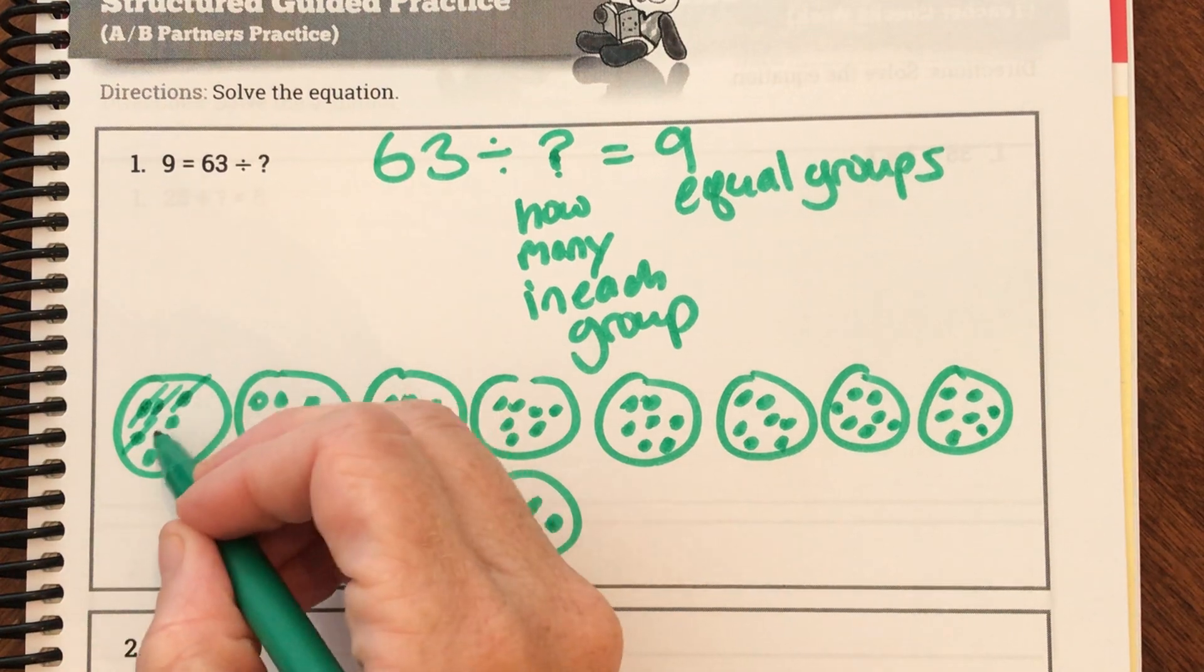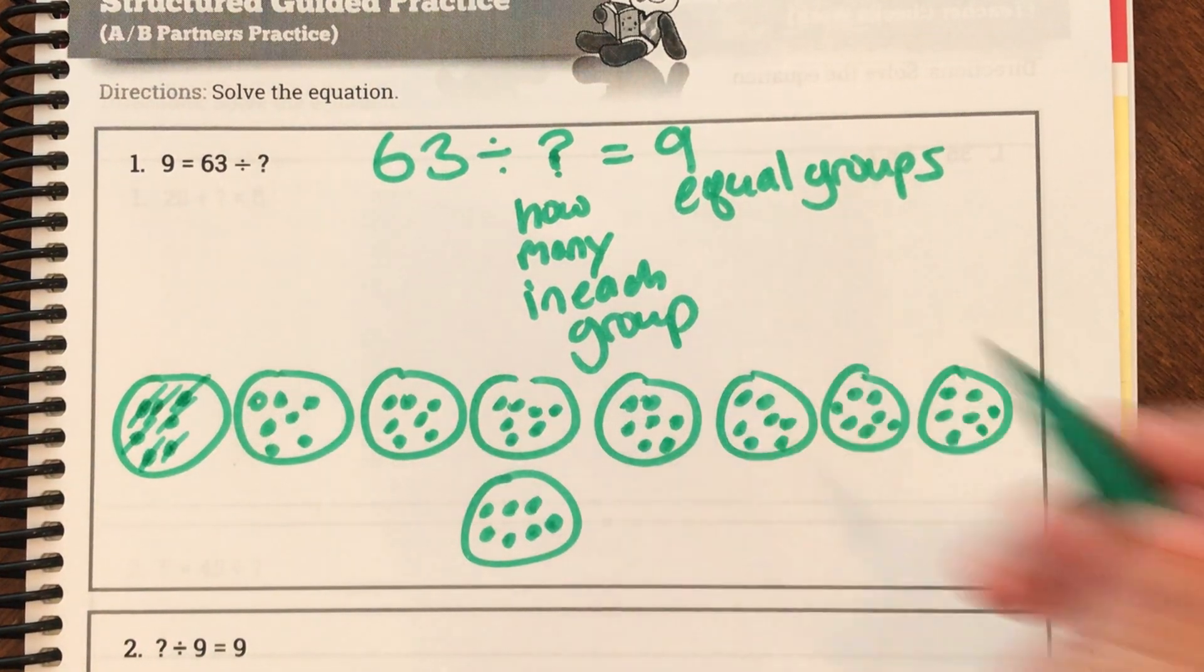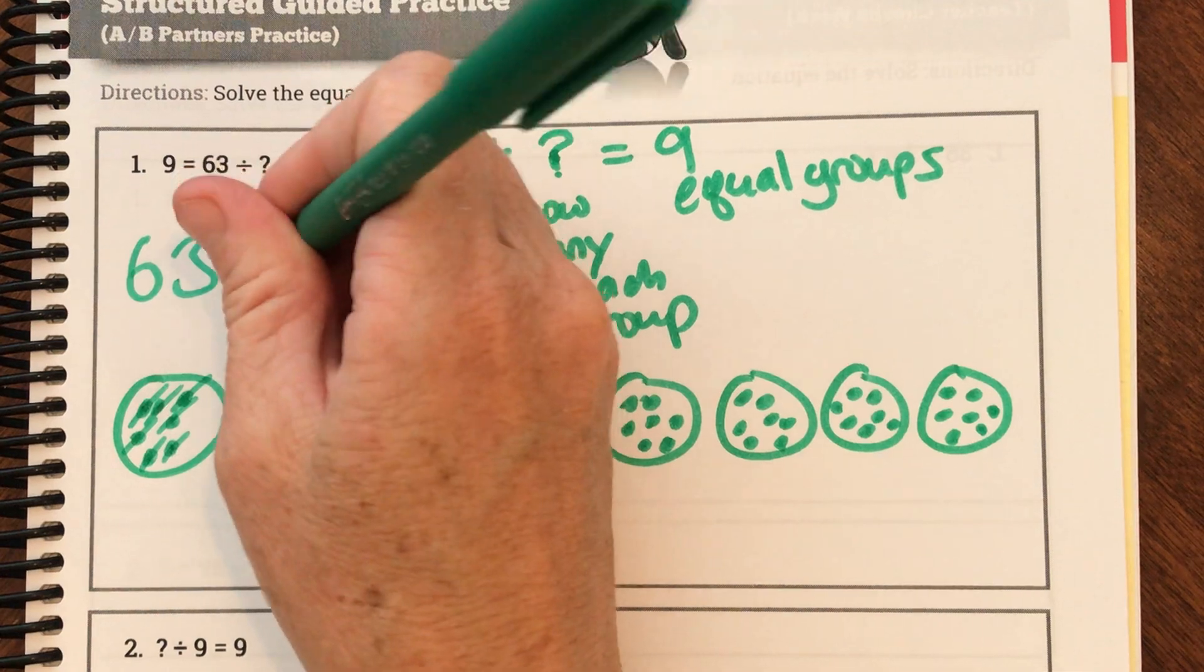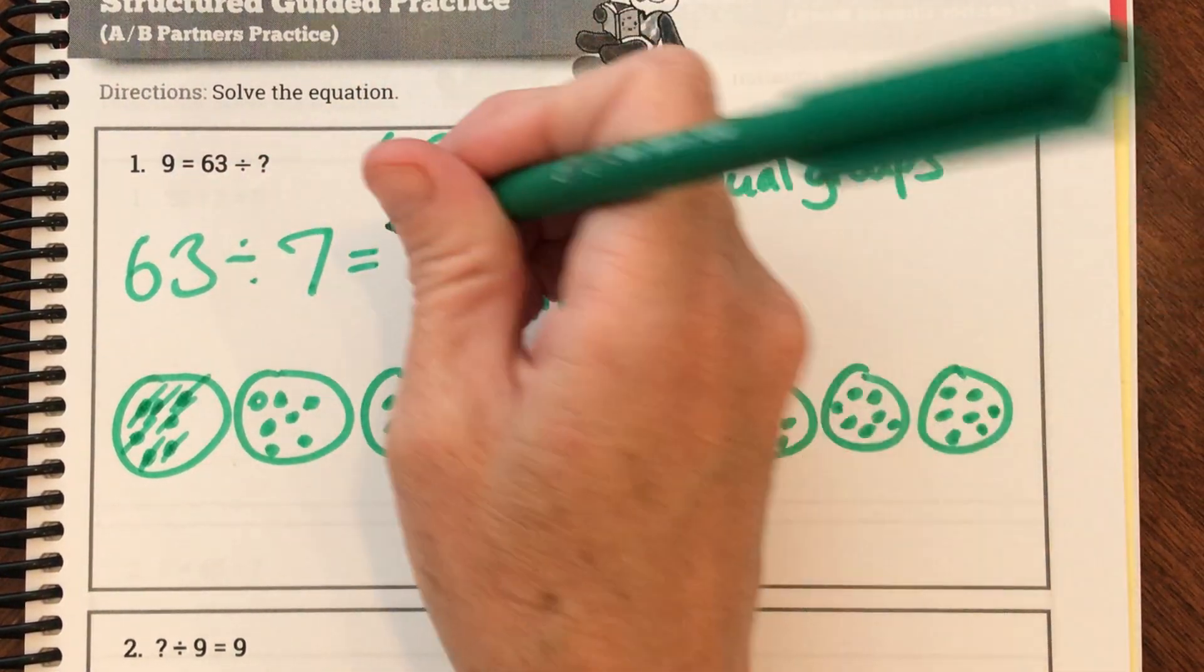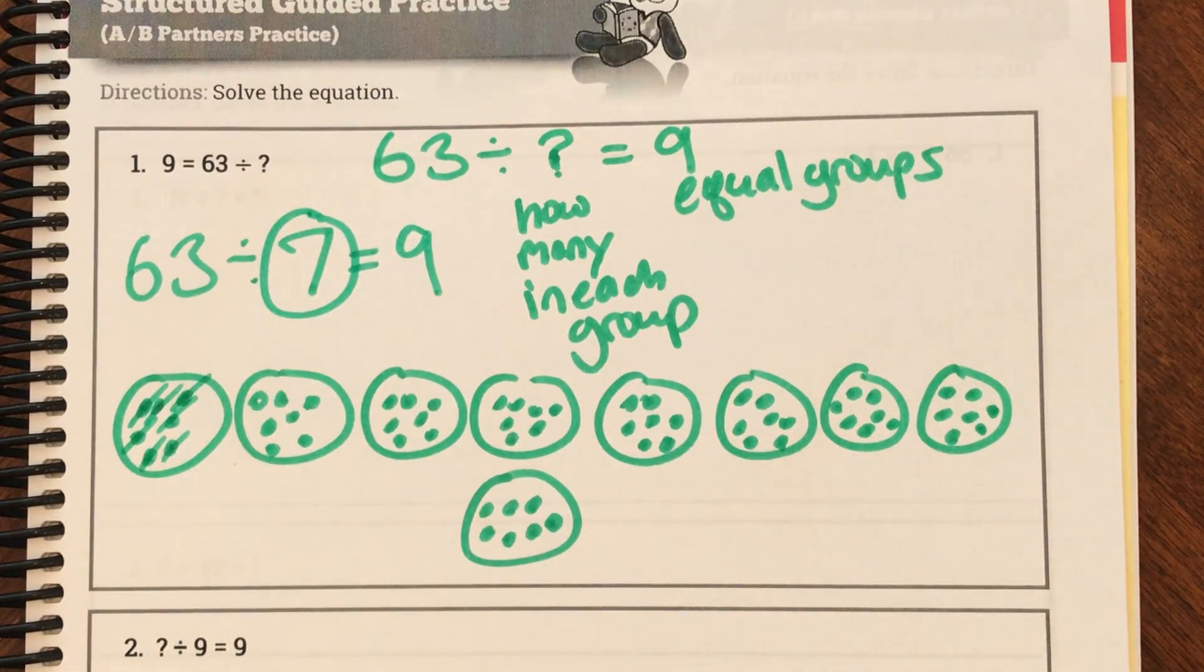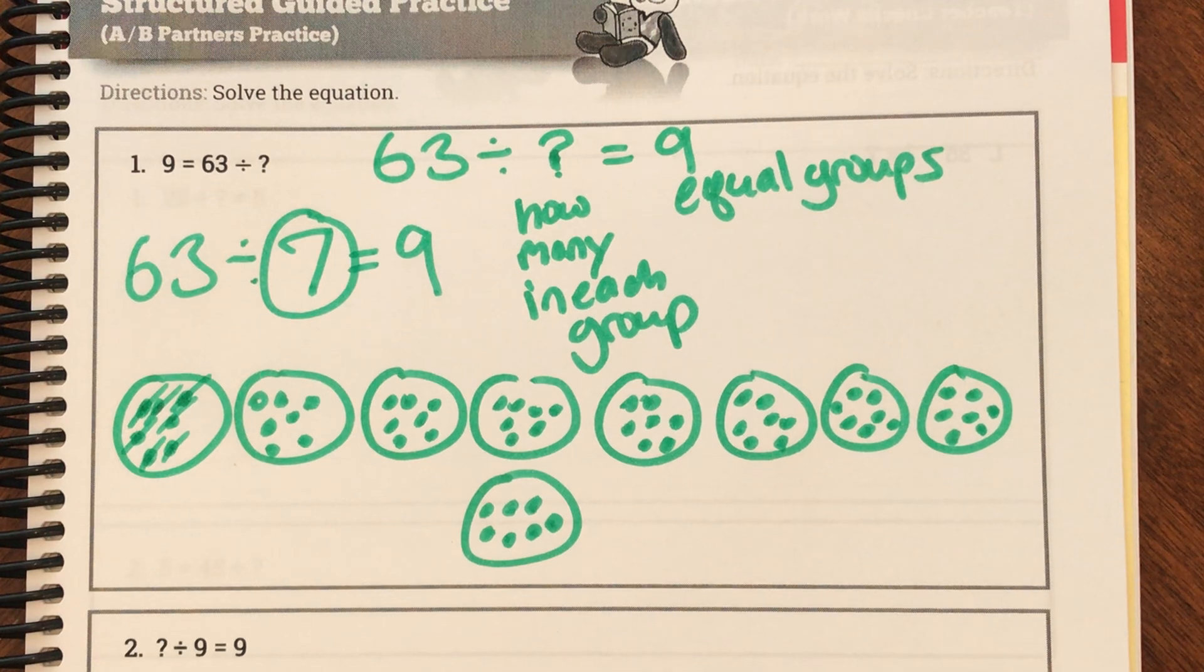One, two, three, four, five, six, seven. So we put seven in each of our groups, which means our unknown was seven.